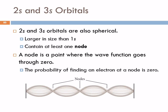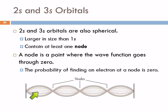So what about the 2s and 3s orbitals? Well, they are also spherical. They're larger in size than the 1s, and they contain at least one node. If you get a standing wave forming, here you have the wave constructively interfering with itself, and here it's destructively interfering — this is called a node. If this were a string vibrating, it doesn't move at those points. The wave function goes through zero. So with these larger 2s and 3s orbitals, the 2s orbital has one node besides the nucleus, and the 3s has two nodes — two positions where the probability of finding the electron is zero.